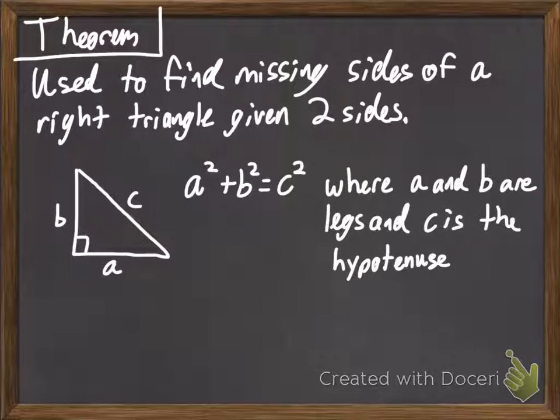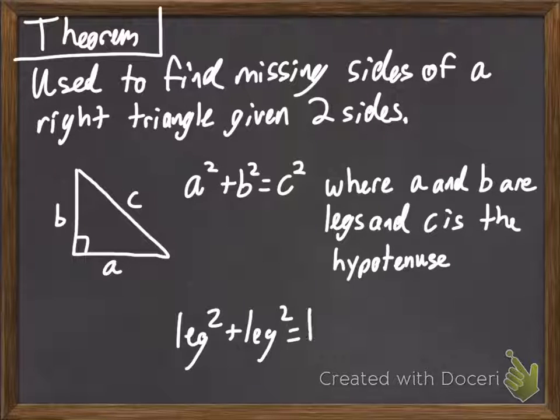Whenever we're doing our Pythagorean Theorem, we always want a and b to be the legs and c to be the hypotenuse. That way, it follows this formula here of a squared plus b squared equals c squared. This works in every single right triangle.